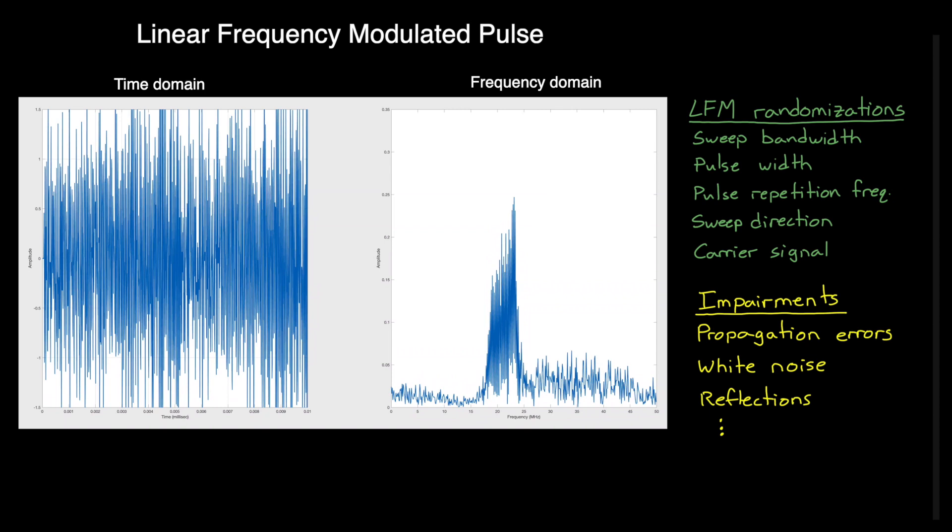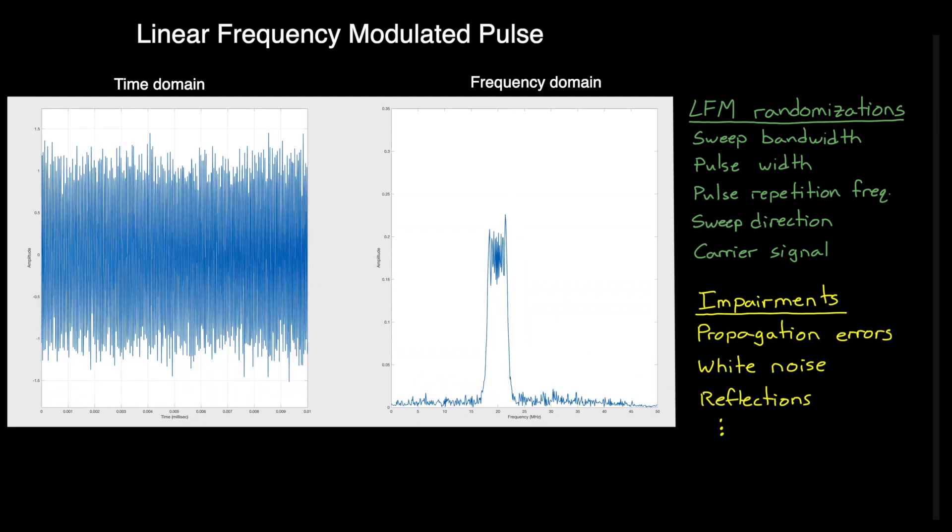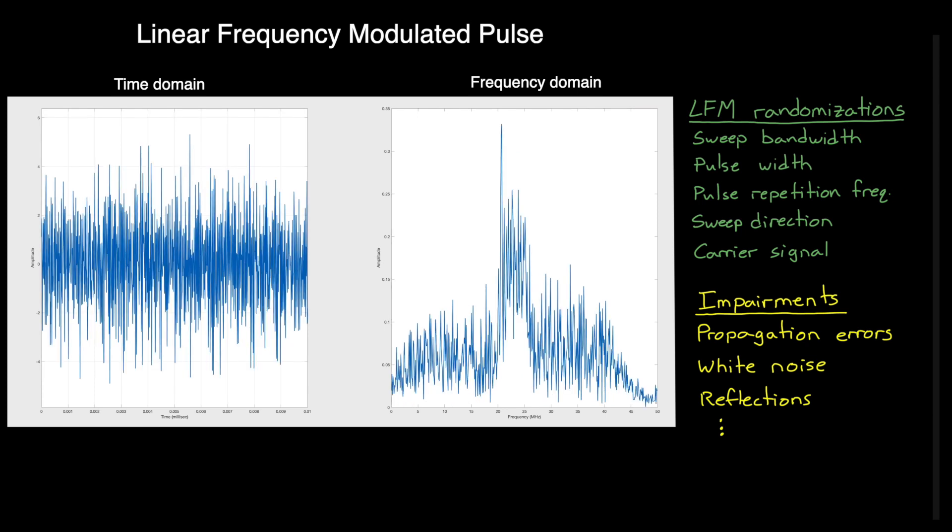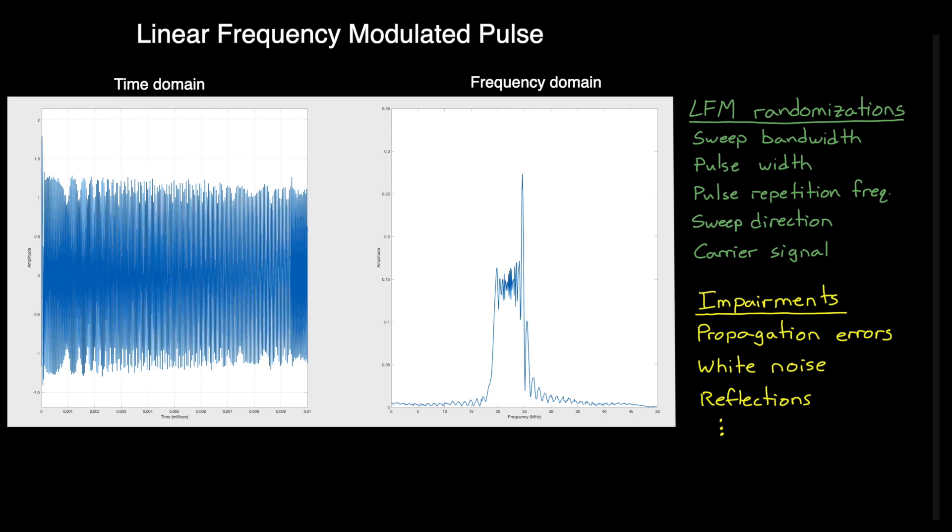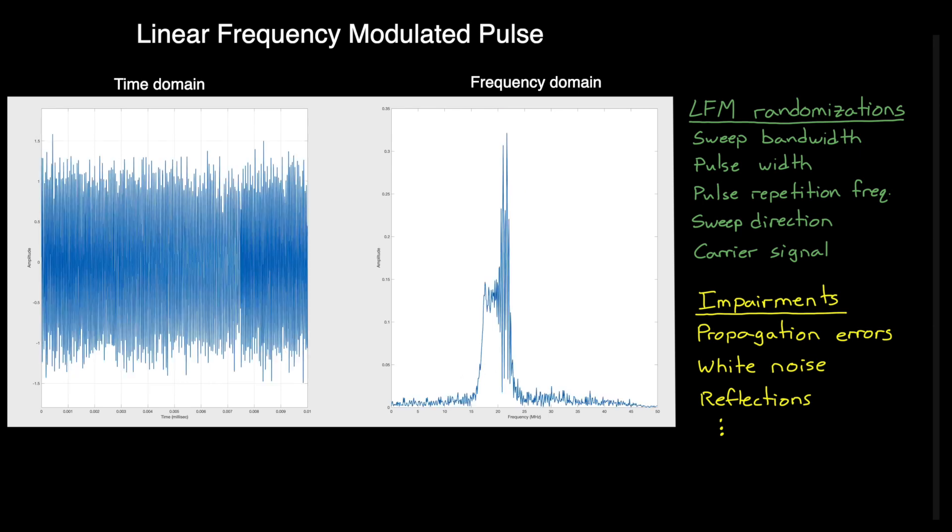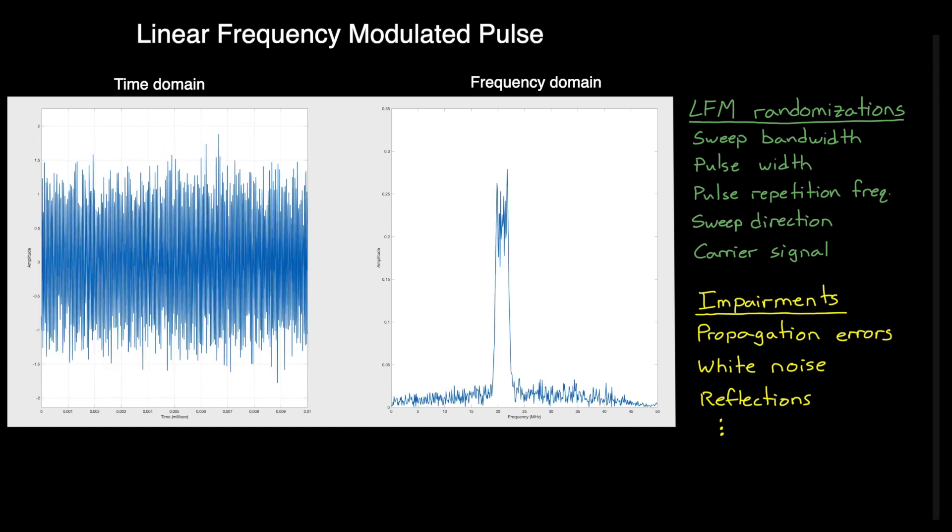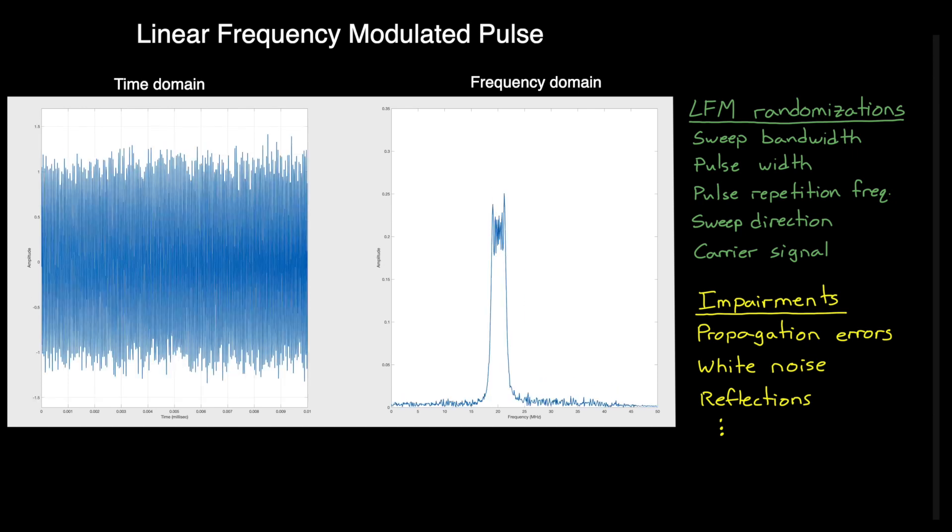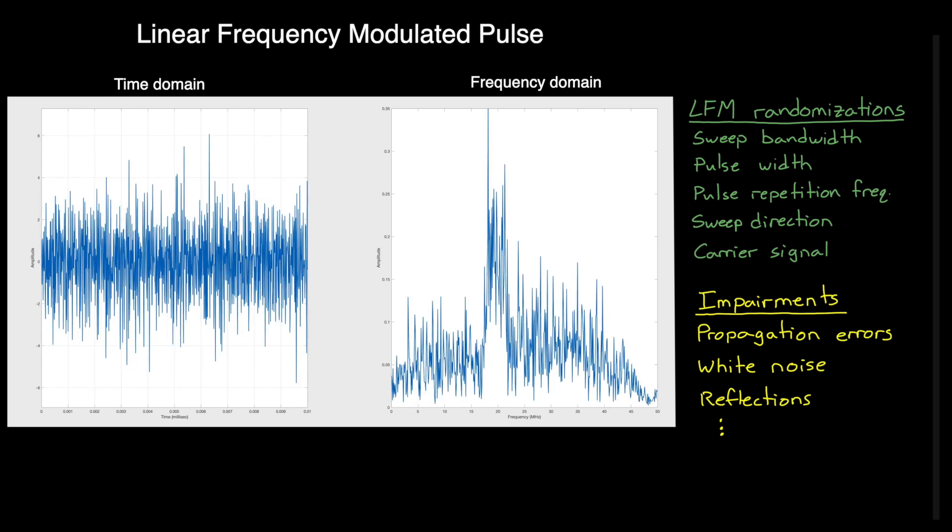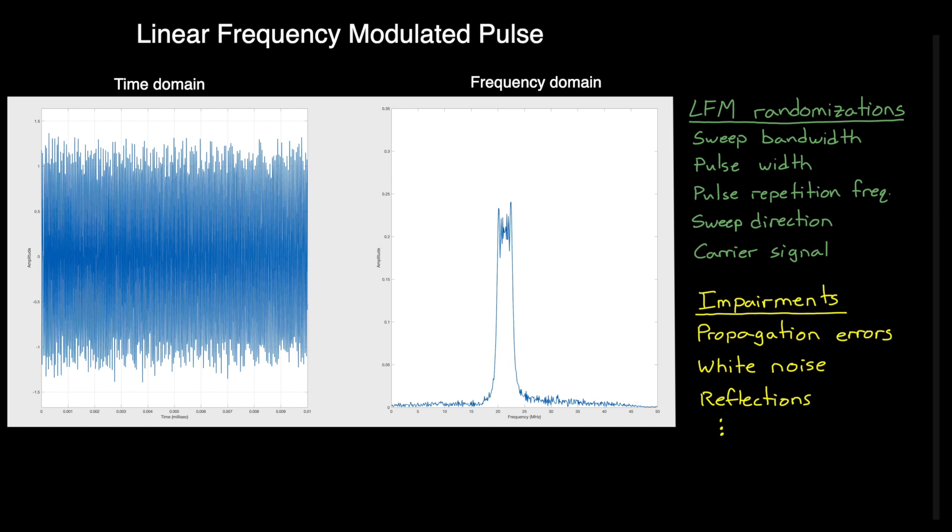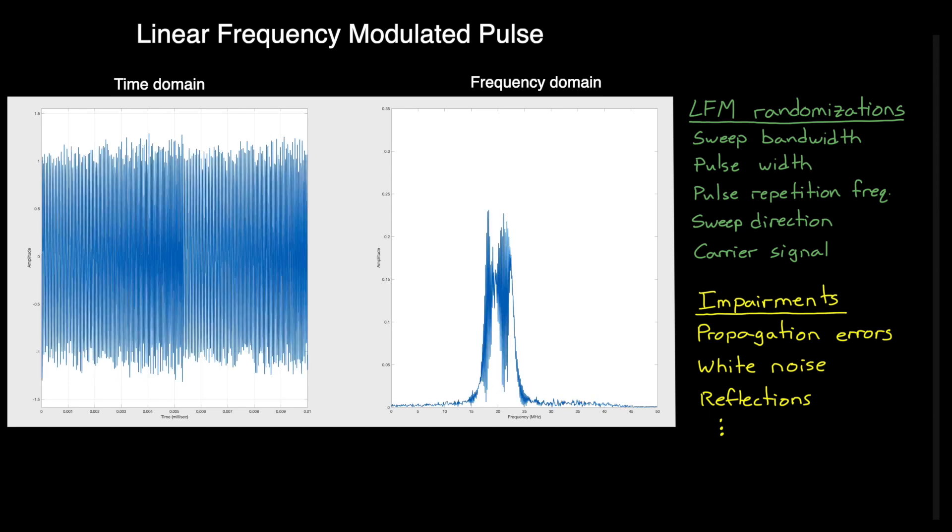So this is one noisy LFM waveform. But here is another. And another. And this is really the crux of our problem. Our waveform classifier needs to be able to recognize all of these as linear frequency modulations. And more than that, it also needs to recognize other modulations that look very similar to LFM and take up the same frequency bandwidths and are subjected to the same noise sources and errors.